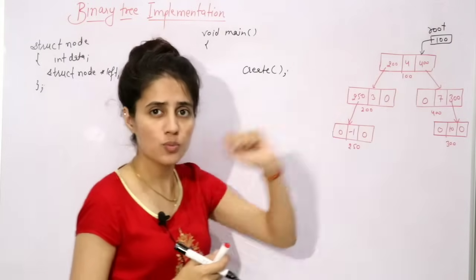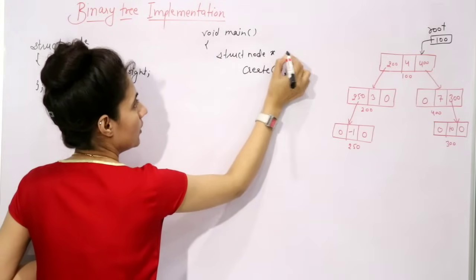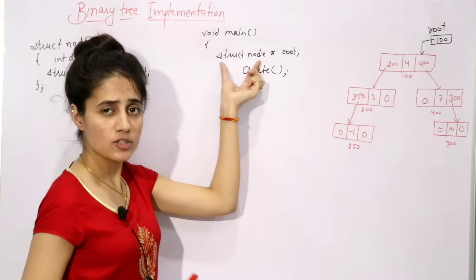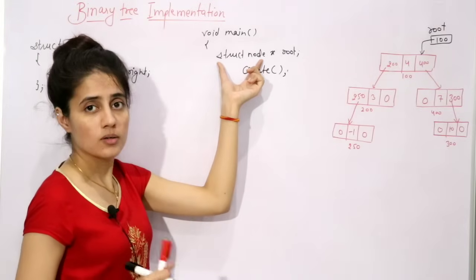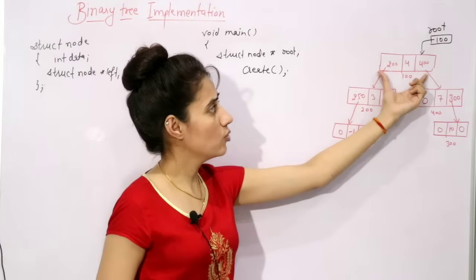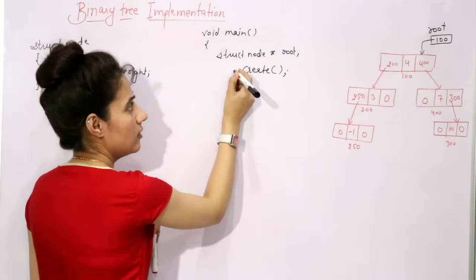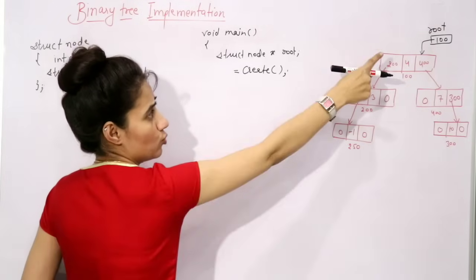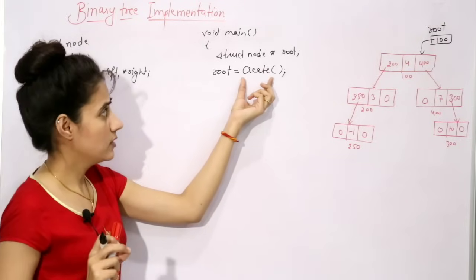We define the struct node data type with three parts: one data part and two pointer parts — left pointer and right pointer. Now in the main function, we are going to call a 'create' function to build this tree. Whatever this create function returns — the address of the root node, which is 100 — we are going to store in 'root'. So we write 'struct node *root = create();' and define the create function.